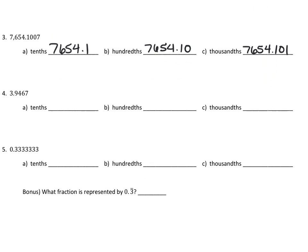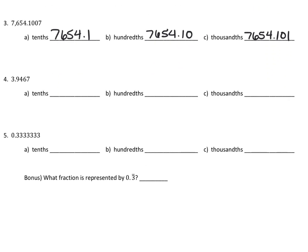The fourth problem: if rounding to the tenths, that's just 3.9; then 3.95 for the hundredths; and then 3.947 for the thousandths.